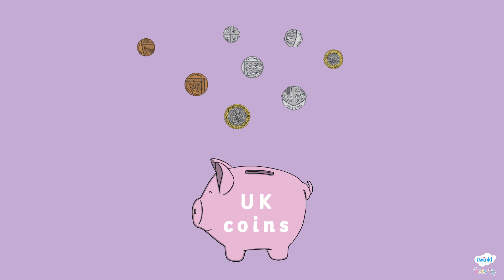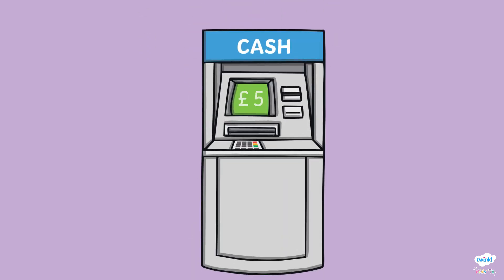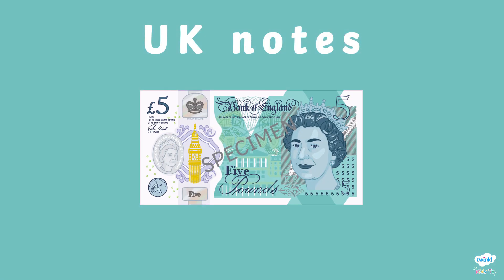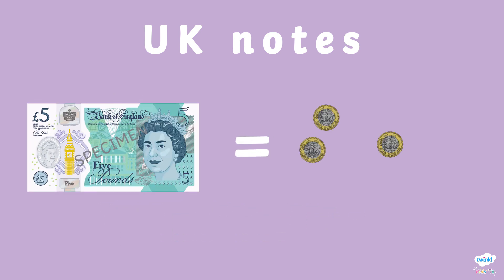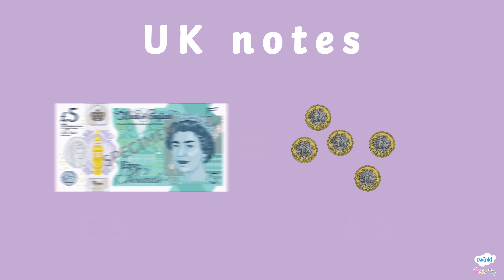Let's get some money out of this cash machine. We want £5. It's not in coins, but instead it's a note. You can tell the difference between the value of each of the notes from their colour and size, but a bigger giveaway is the number in the top left corner. This number represents how many pound coins make up that note. A £5 note is bluey-green in colour and is worth exactly the same as five £1 coins.